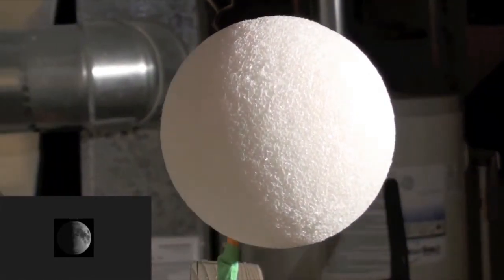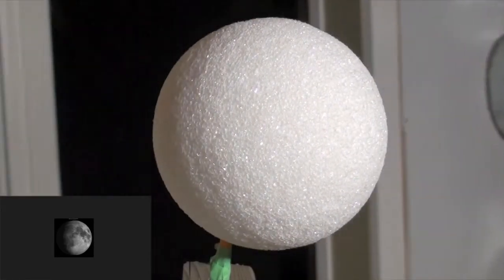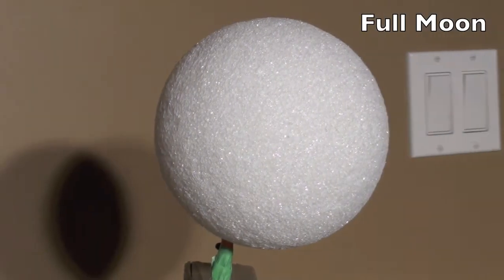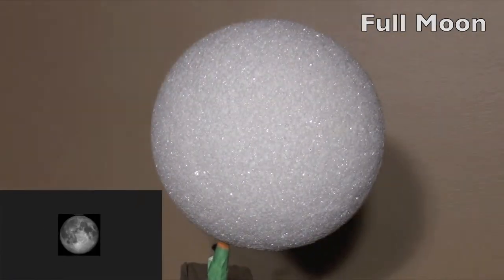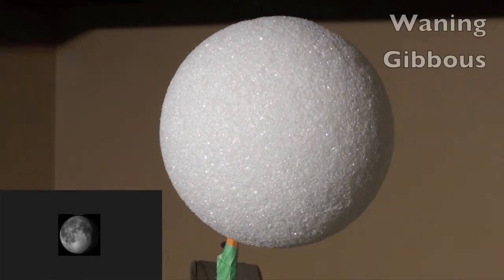If you start with the foam ball closest to the lamp you'll start with the new moon and then as you turn counter clockwise slowly you should see something very similar to all the real moon phases.